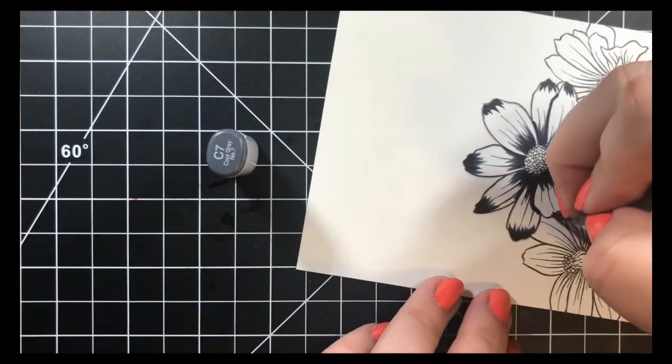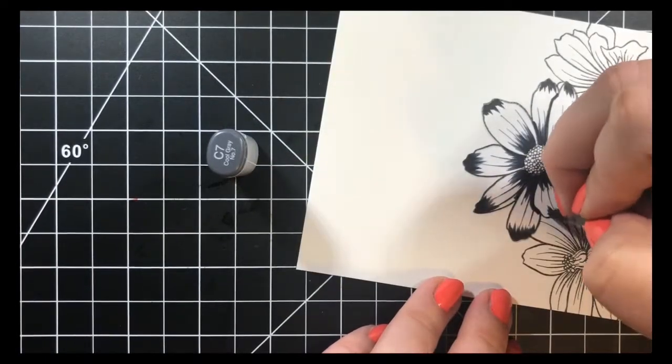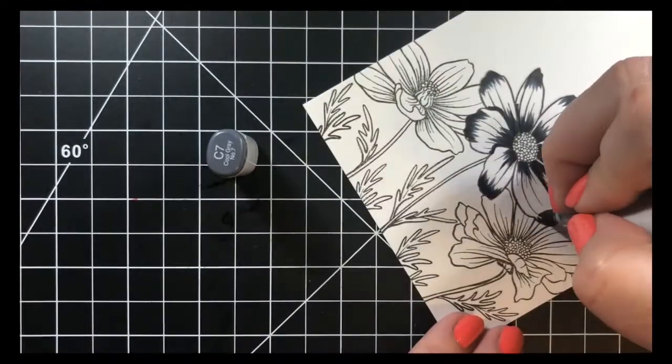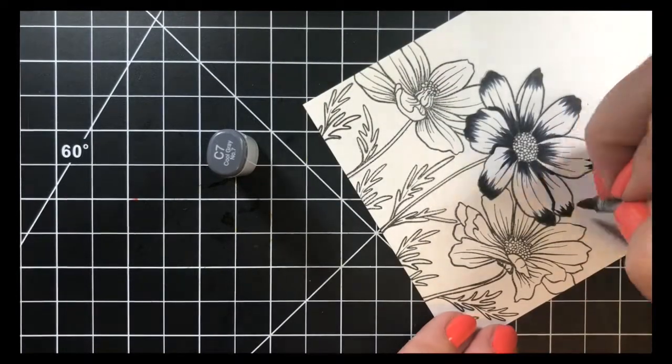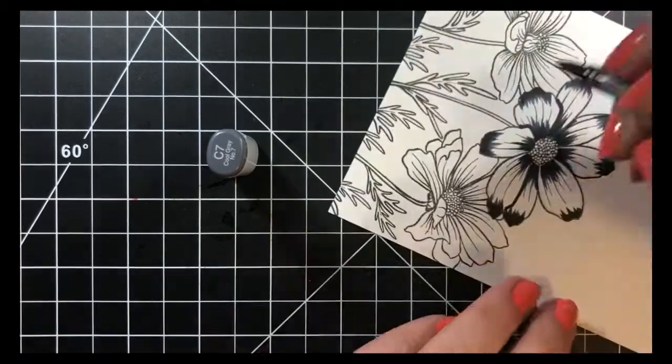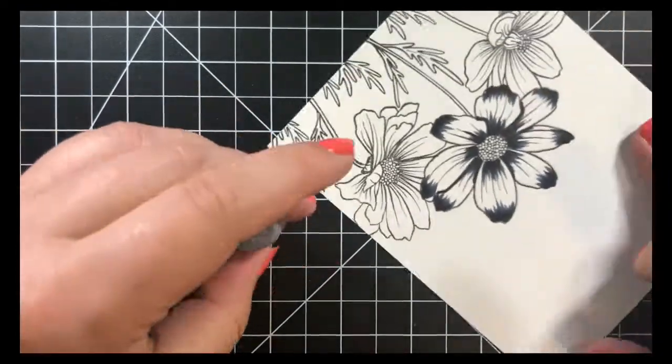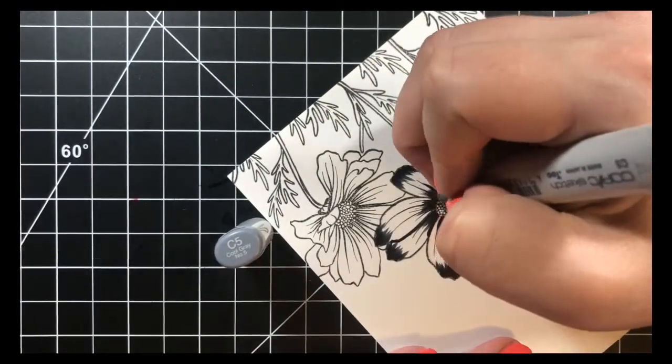Keep in mind that you can always add more color later, so start off with very small flicks. If you need to add a little bit more shadows later, you can always go back and do that, but you can't take it away once it's down. Once my C7 was on there, I went on to my C5 and again just basically did the same thing.